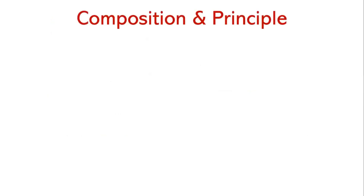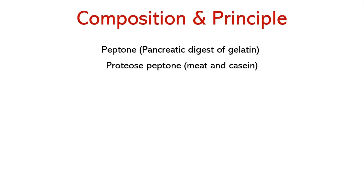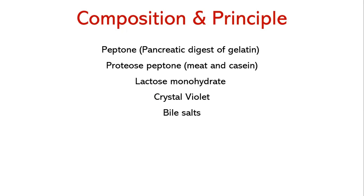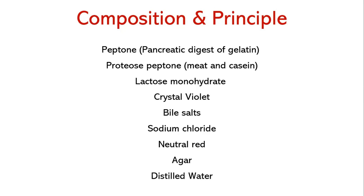The ingredients of McConkey agar include pancreatic digest of gelatin and peptones that provide essential nutrients, vitamins, and nitrogenous factors for microbial growth. Lactose monohydrate serves as the fermentable carbohydrate source. Crystal violet and bile salts provide selective action by inhibiting most gram-positive bacteria. Sodium chloride maintains osmotic balance. Neutral red is a pH indicator that turns red below pH 6.8 and is colorless above 6.8. Agar is the solidifying agent.